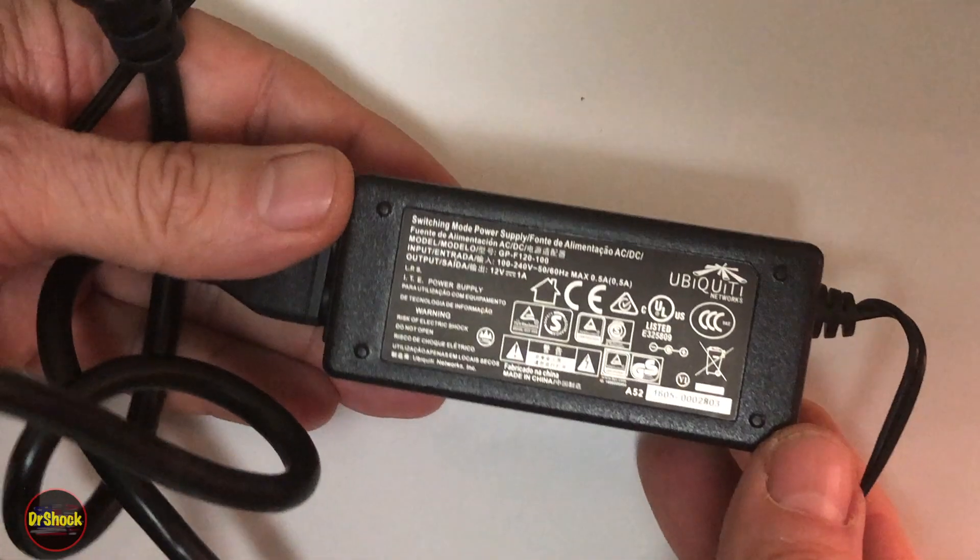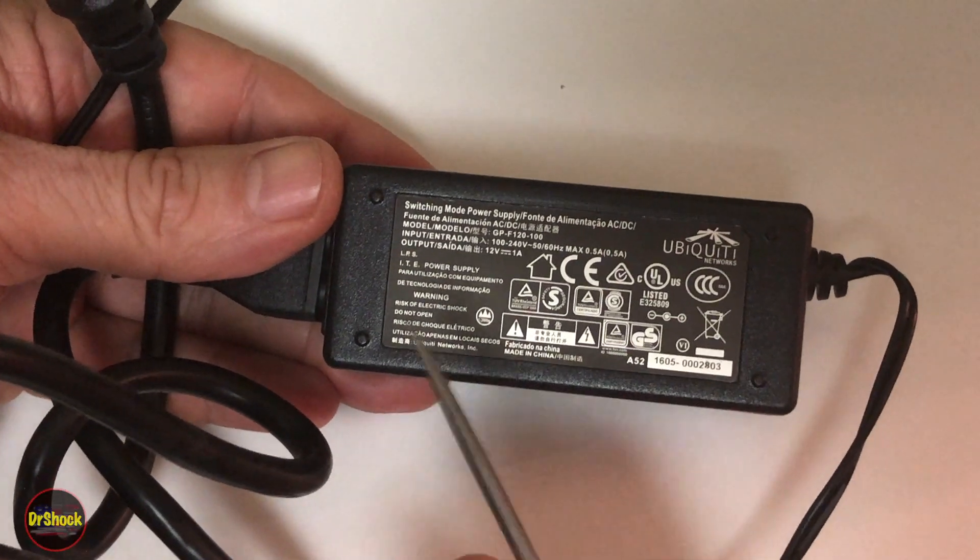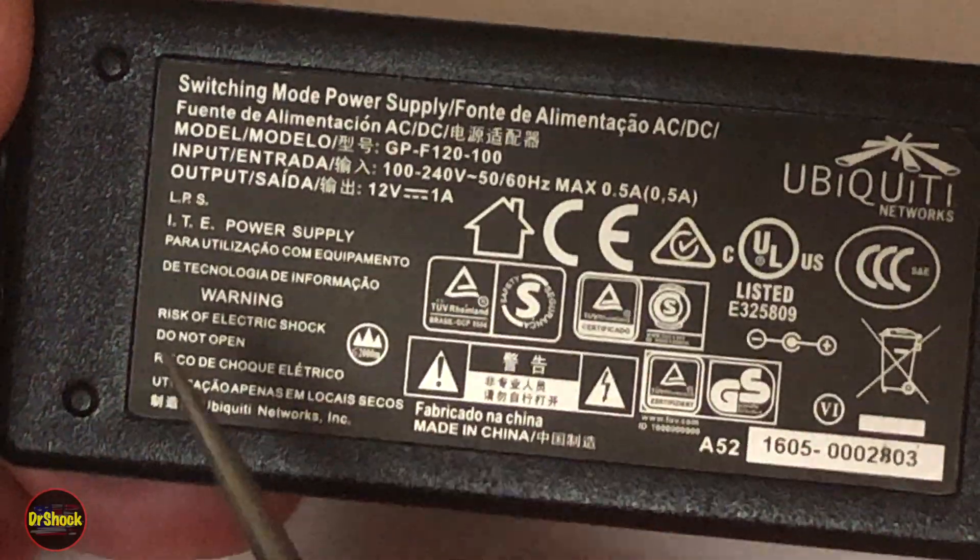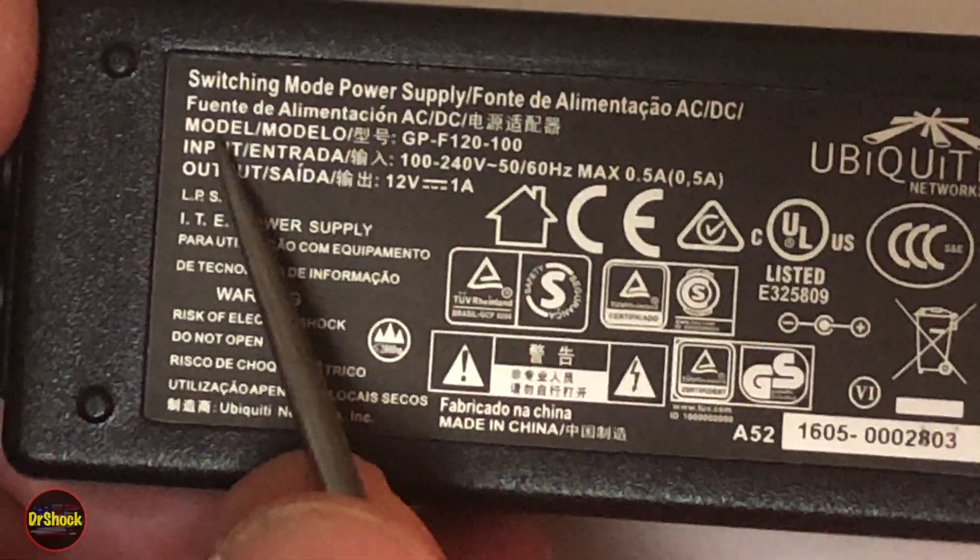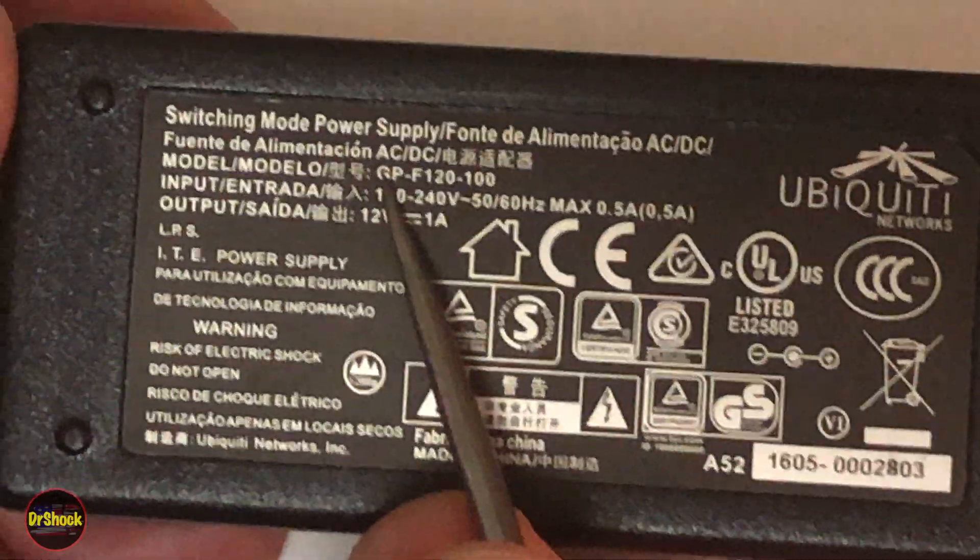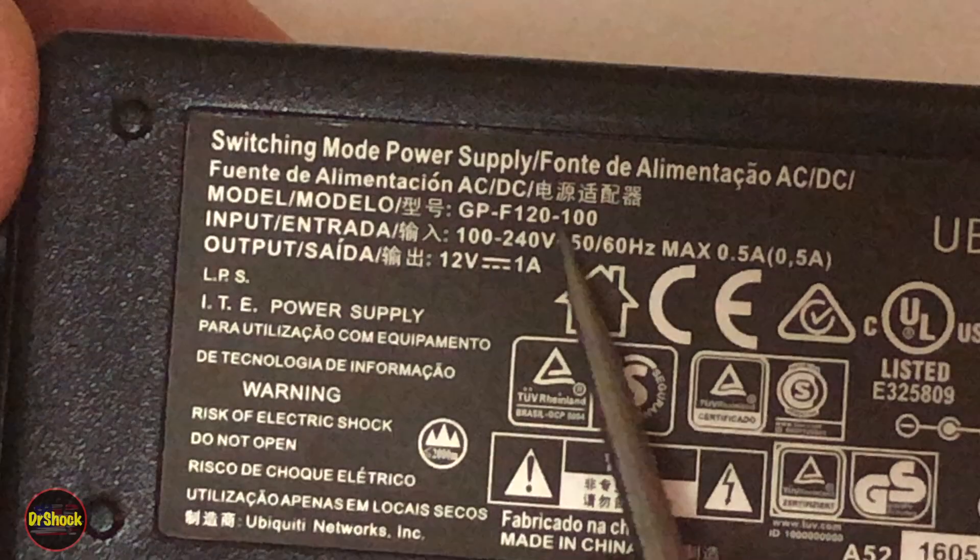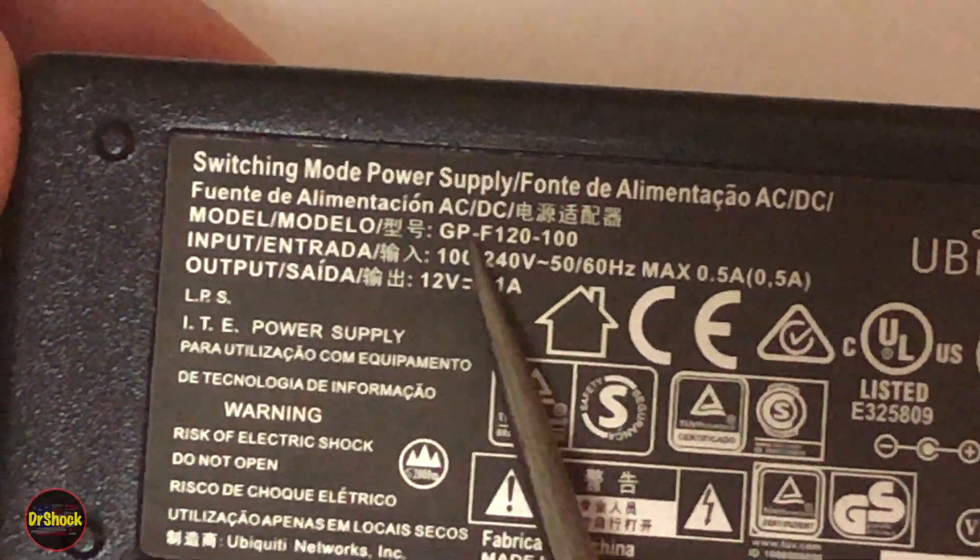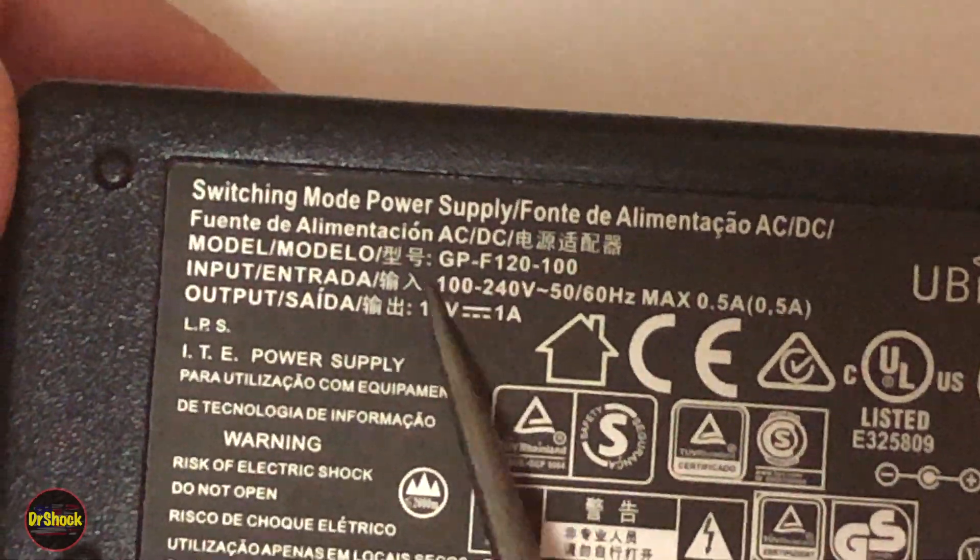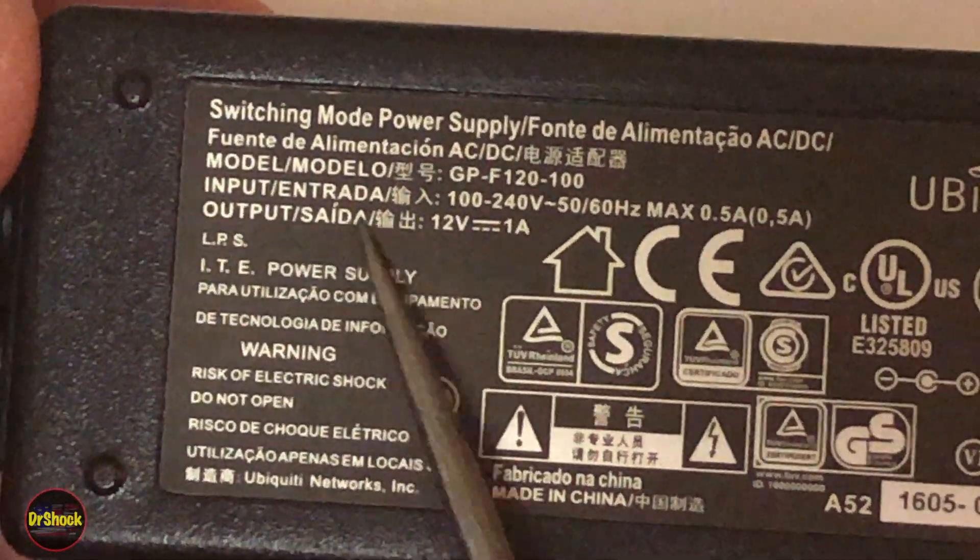Alright, so here's our original EdgeRouter power supply from Ubiquiti and there's a couple of things that you'll need to know about replacing it because they don't sell replacement parts. First off is there's a model number on here from Ubiquiti, this guy right here. We zoom in close enough you can make out the GPF 120-100 model number. So that's something that's useful to search on although they don't sell this. The more pertinent information is right down here on the output side, so this is what the power supply puts out.